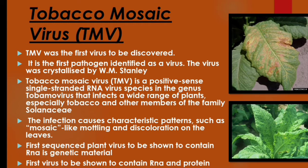TMV is a species in its genus — a tobacco virus that infects a wide range of plants, especially tobacco and other members of the family. The infection causes characteristic patterns such as mosaic-like mottling and discoloration on the leaves. It is also the first virus shown to contain both RNA and protein.